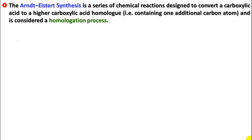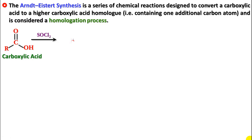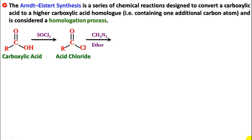First of all, we convert a carboxylic acid into the activated form, which is the acid chloride. We convert this into an acid chloride by using thionyl chloride. The acid chloride then reacts with diazomethane (CH₂N₂) — ether is the solvent — and we are able to get a compound called a diazo ketone.